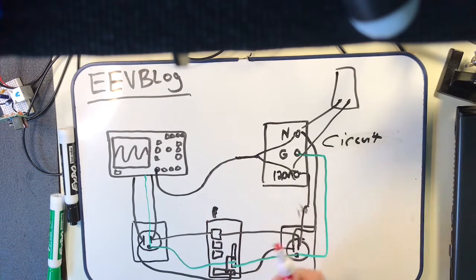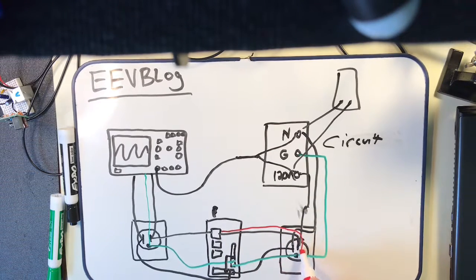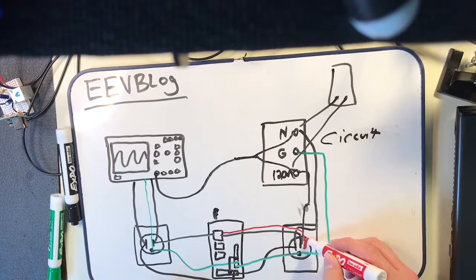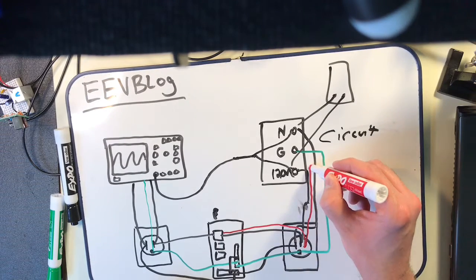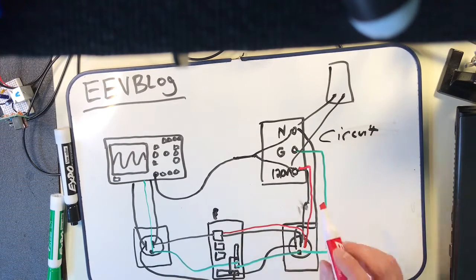You're not safe with this though. So what'll happen is, electricity will come in through your breaker, through the hotline, to your outlet. It'll go from your outlet to your circuit to the 120 volt input.